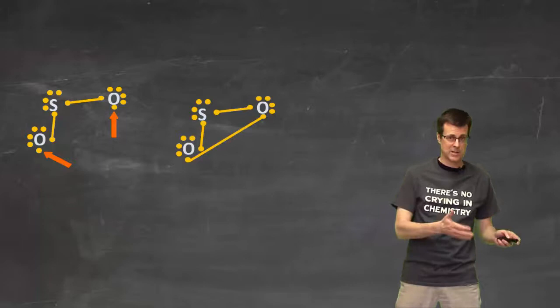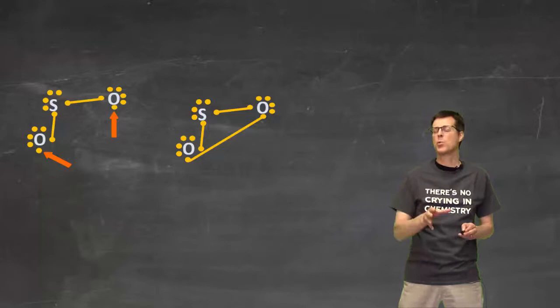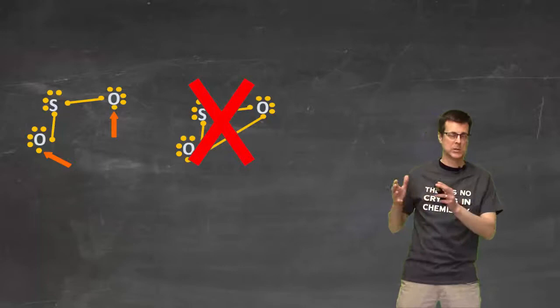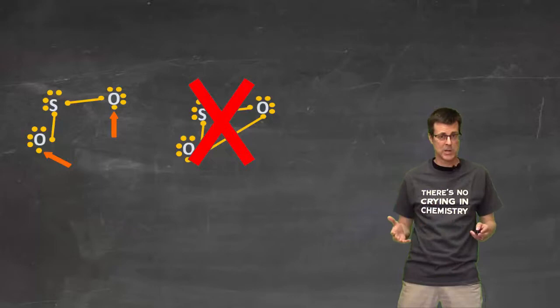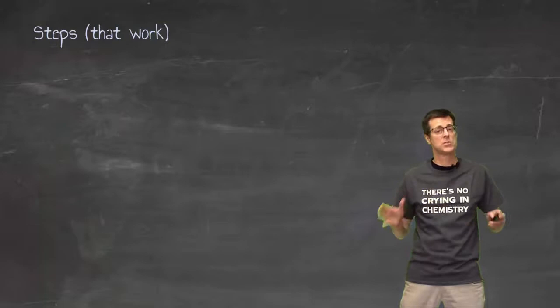And while on paper that meets the criteria of connecting the dots and single electron to single electron, the problem is that that is definitely not how that molecule exists. And if what we are trying to do is come up with a system of drawing diagrams that shows a picture of the molecule as close as possible to how it actually exists, then that method does not work.